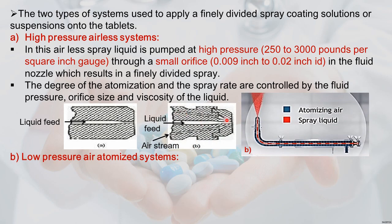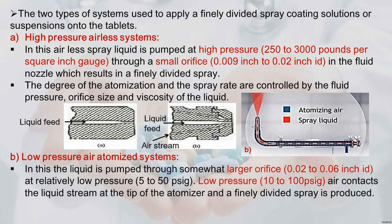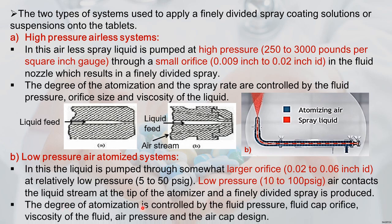The second is the low-pressure air-atomized system. It has a liquid feed and also an air stream duct. Liquid is pumped through a larger orifice of 0.02 to 0.06 inches at relatively low pressure of 5 to 50 psig. Low-pressure air at 10 to 100 psig contacts the liquid stream at the tip of the atomizer, producing finely divided spray. Degree of atomization is controlled by fluid pressure, fluid cap orifice, liquid viscosity, air pressure, and air cap design.